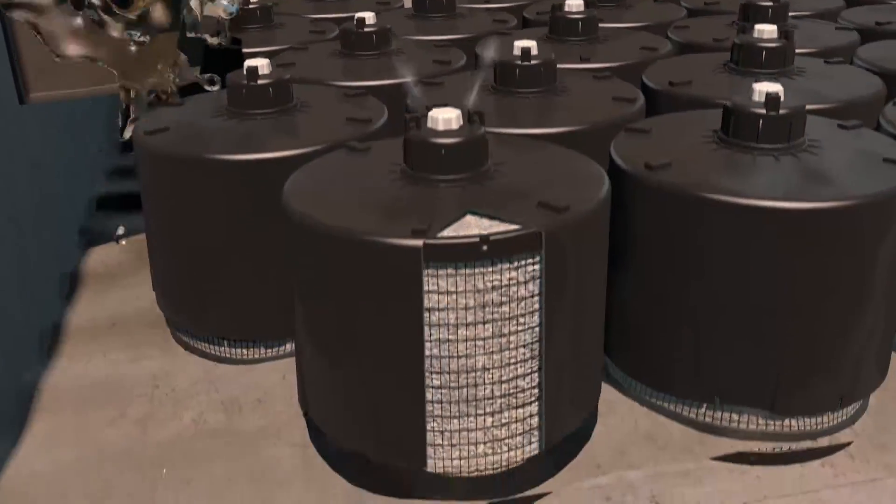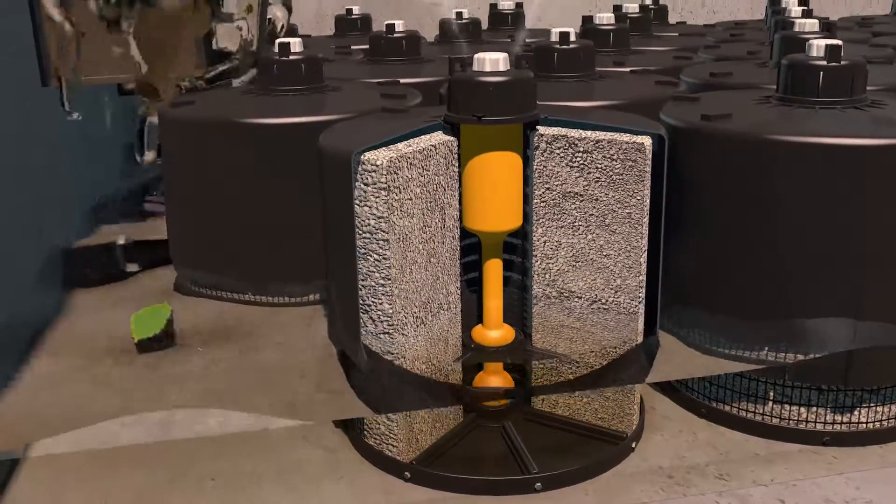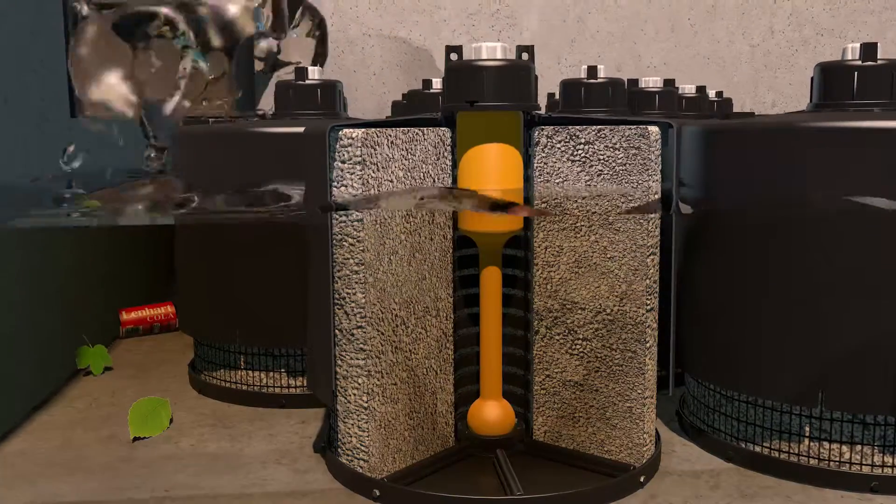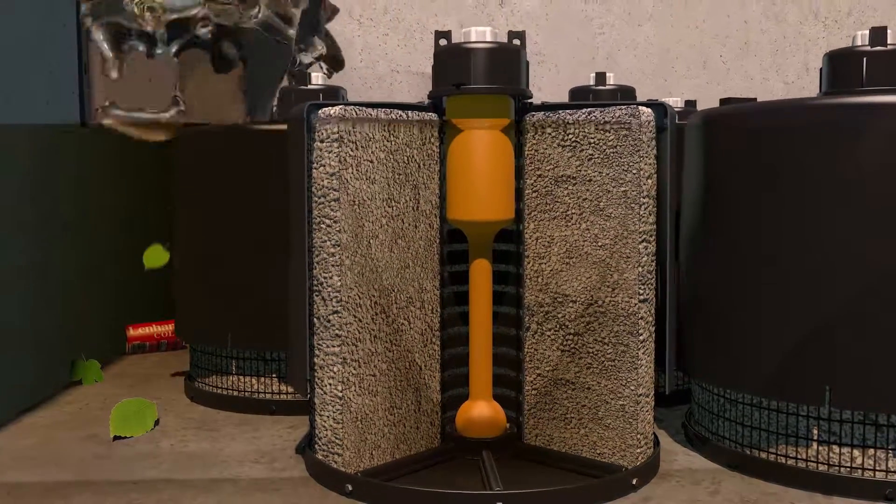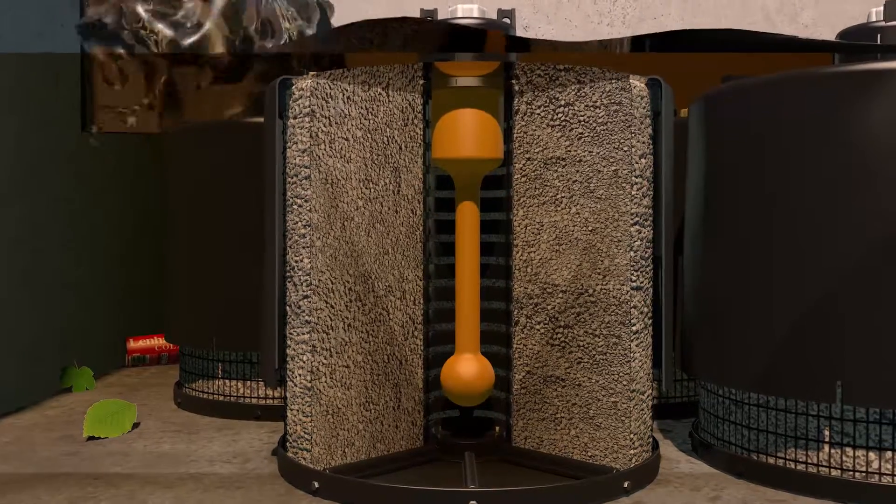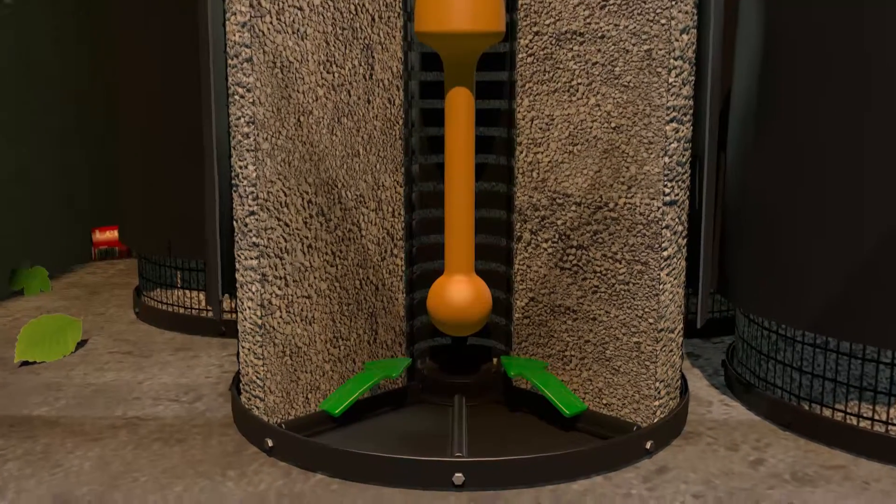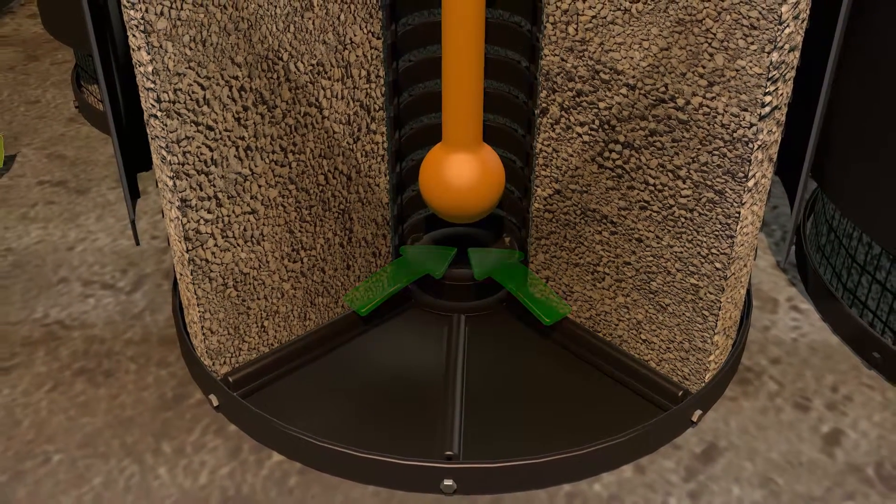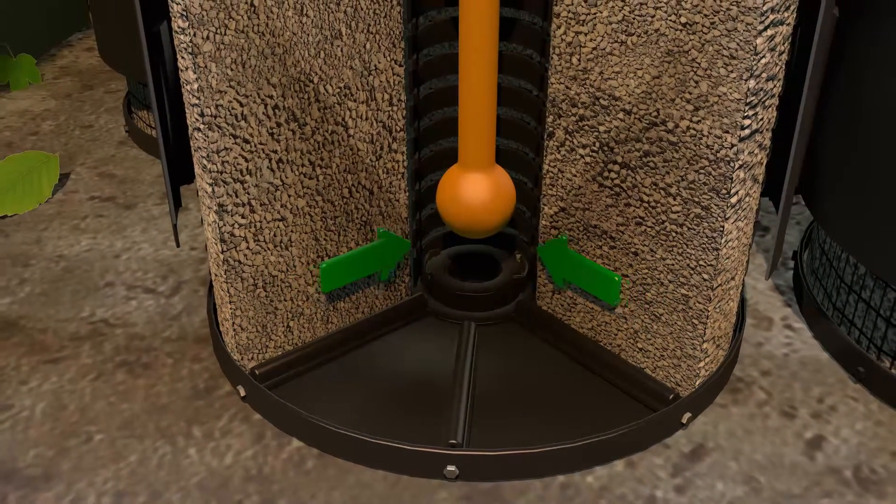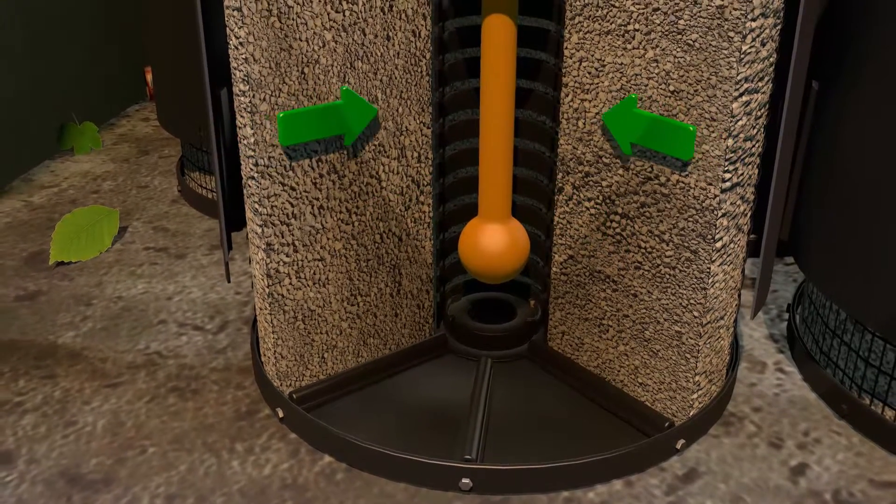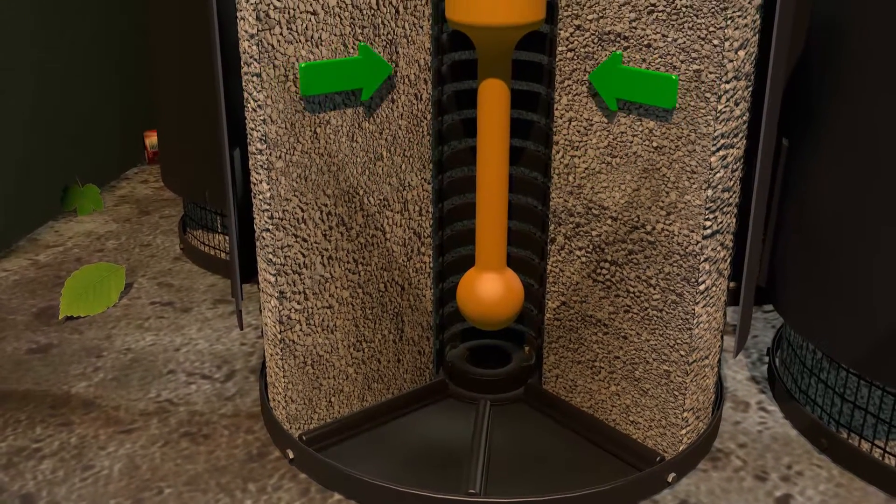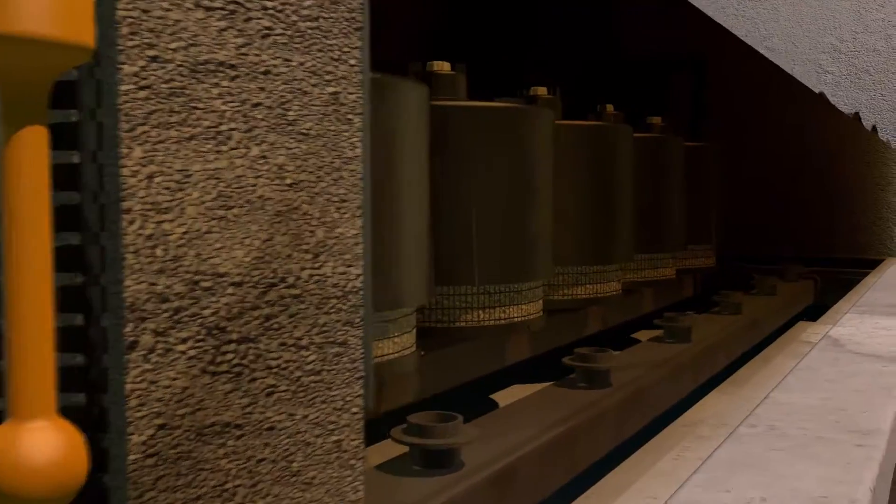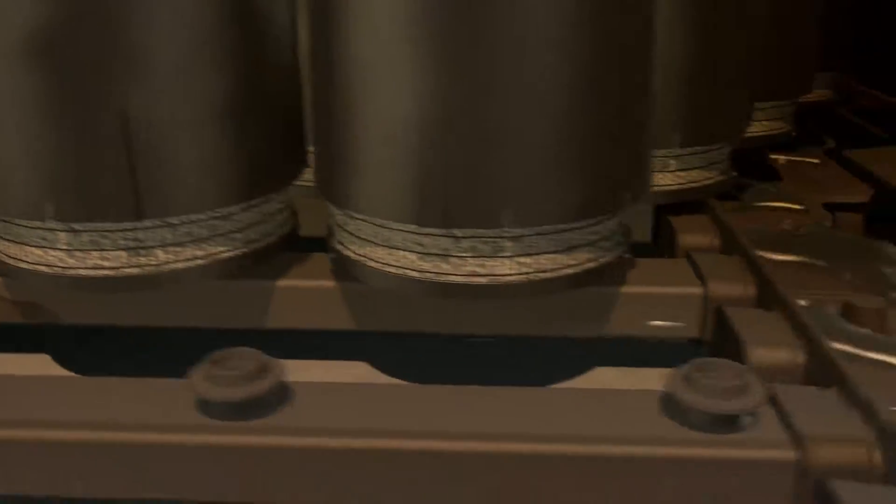Stormwater passes through the filtration media and begins filling the cartridge's center tube. When water reaches the top of the cartridge, the float valve opens and filtered water is allowed to drain at the design flow rate. A one-way check valve then closes, activating a siphon that draws polluted stormwater evenly through the filter media and into the center drainage tube. Filtered water then discharges out of the system through the under-drain manifold.